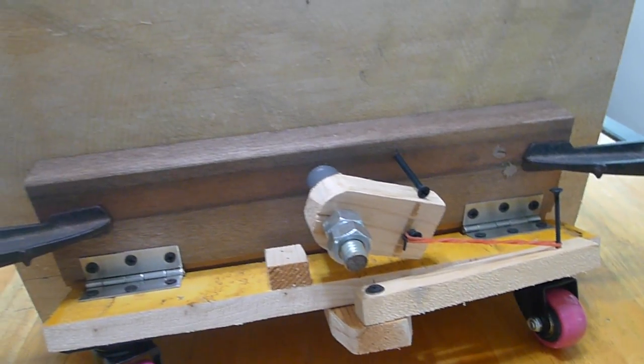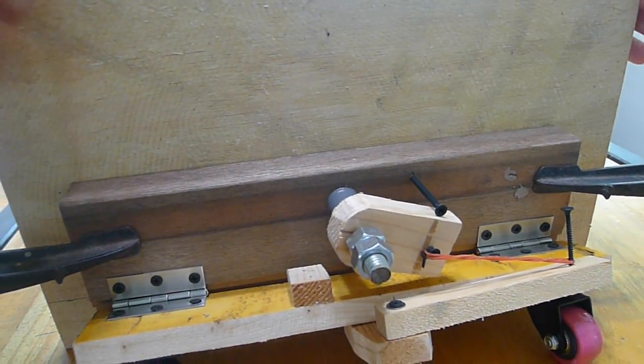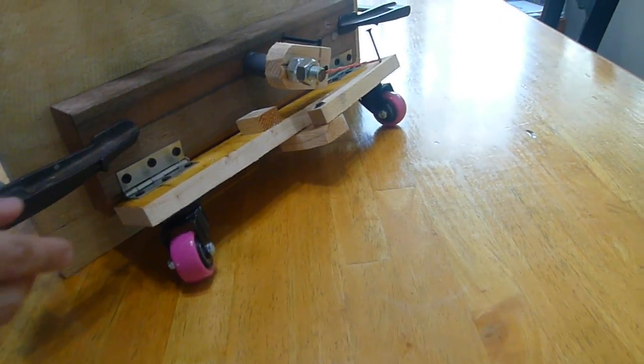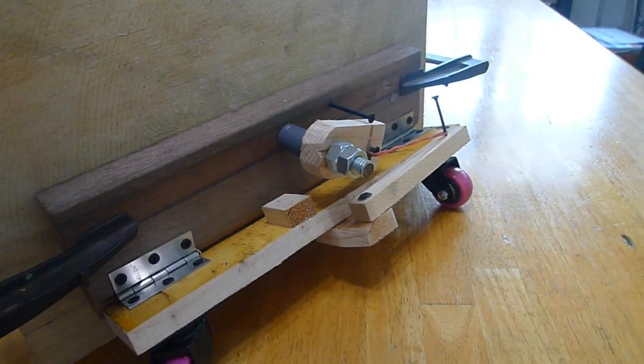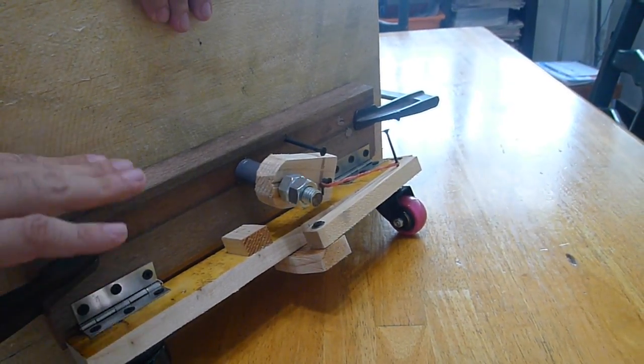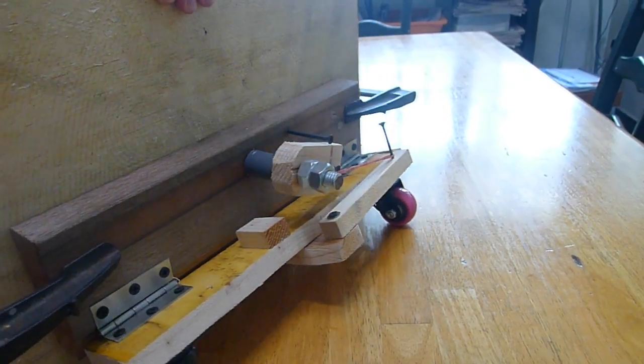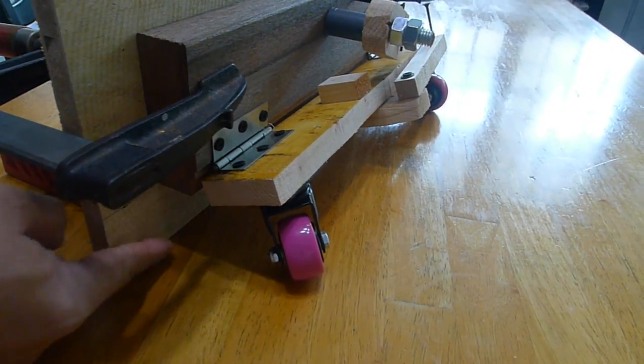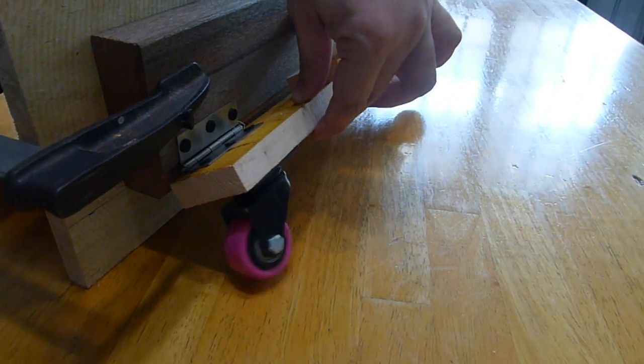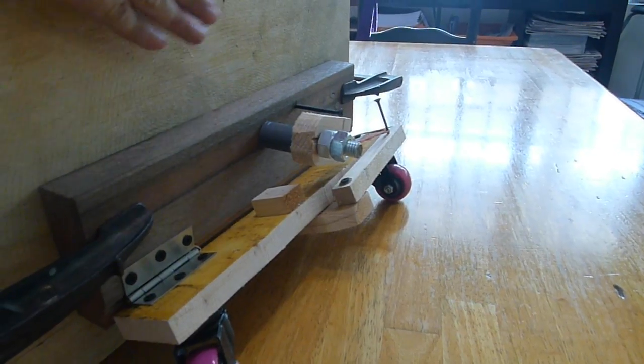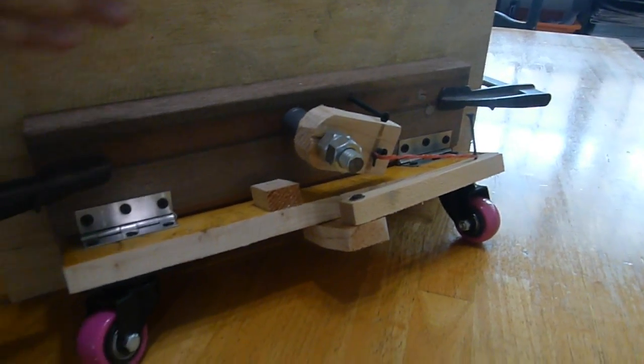Let me introduce to you this wheel assembly which is meant to be attached to the side of a workbench. This portion is attached about 45mm above the edge, and in this position the wheel is retracted. Imagine this is the side of the workbench.